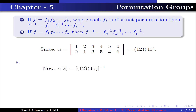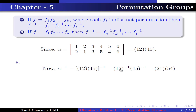Now alpha inverse is the inverse of (1 2)(4 5), which is written as (1 2) inverse times (4 5) inverse — because both are distinct permutations. This is further written as (2 1)(5 4). Since (2 1) = (1 2) and (5 4) = (4 5) as 2-cycle permutations have order 2, we get (1 2)(4 5). Therefore alpha inverse is equal to alpha.